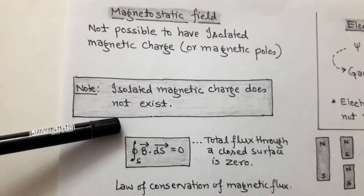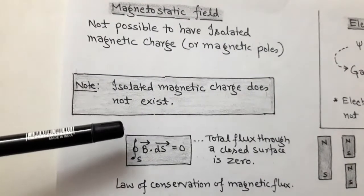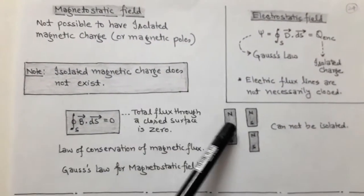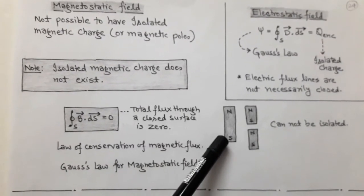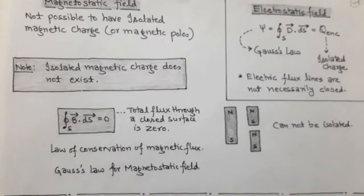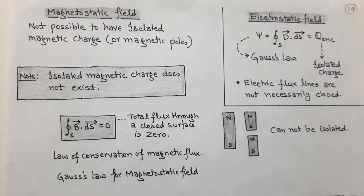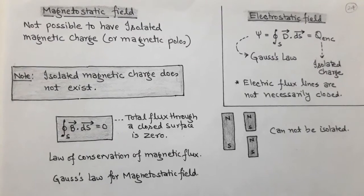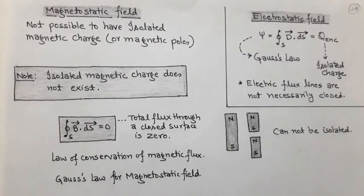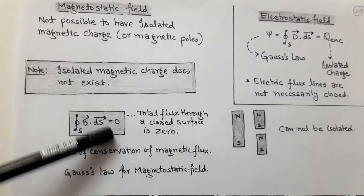In the magnetostatic field, there is no isolated magnetic charge — either a north pole or south pole. When we try to isolate the two poles of a magnet, we get new poles: two new magnets each having a north pole and south pole. So an isolated magnetic charge cannot exist. Therefore, the closed surface integration of B·dS is equal to 0.